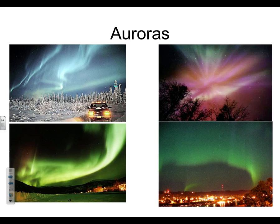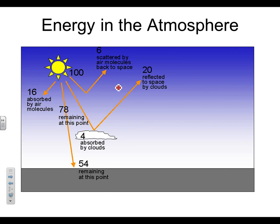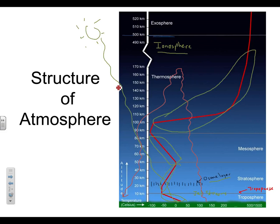The exosphere is the boundary with space. There are radiation layers there called the Van Allen radiation belts, where the solar wind hits the Earth. And that's our quick lesson on the structure of the atmosphere.